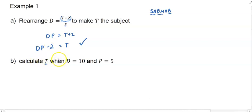So calculate T when D equals 10 and P equals 5. Sub in the number 10, easy to put it in brackets like this, the number 10, the number 5, minus 2 equals T. T will be 50 minus 2, which is 48. Our answer, T equals 48.